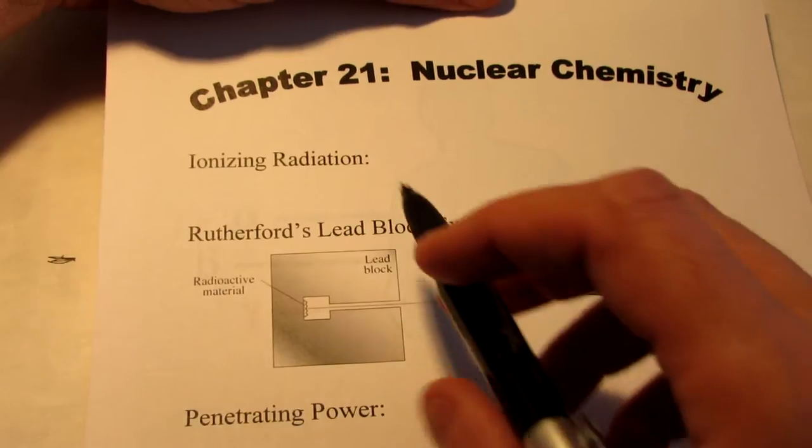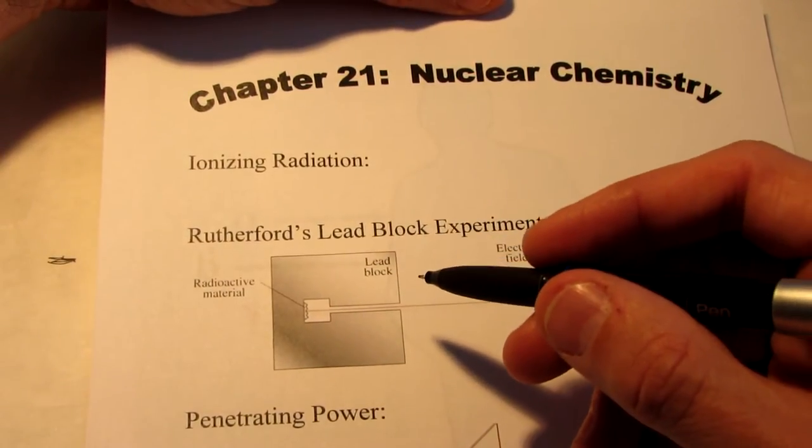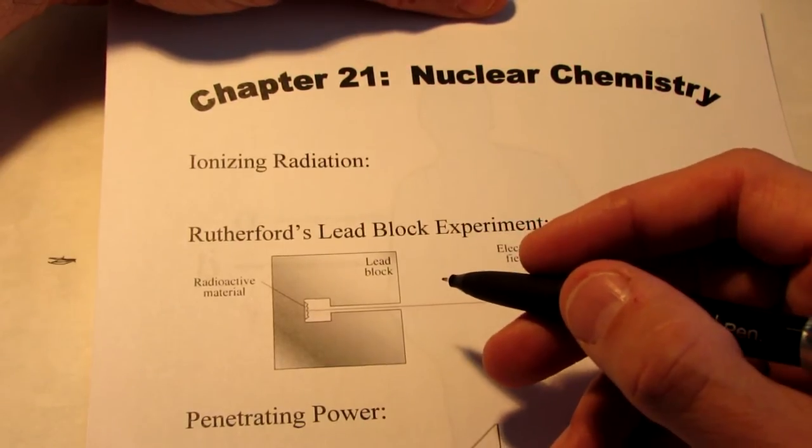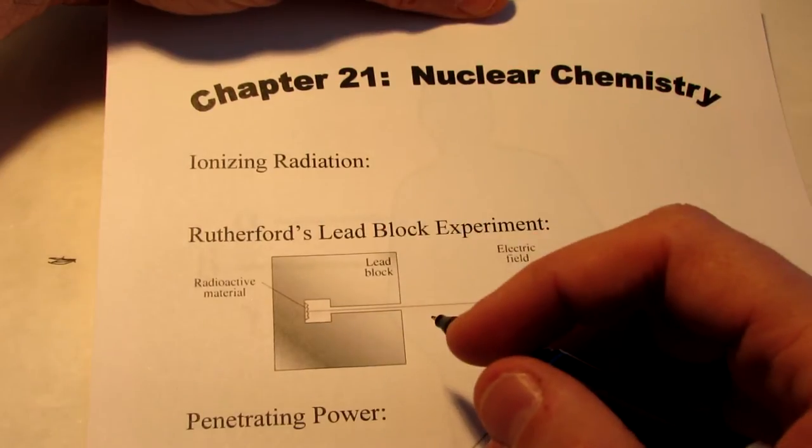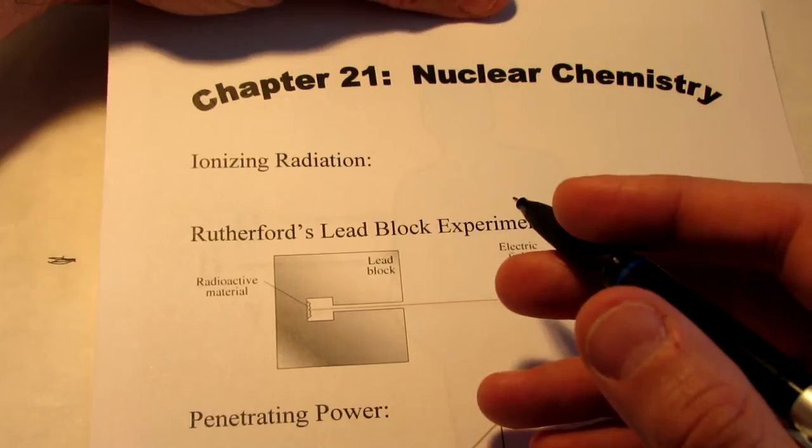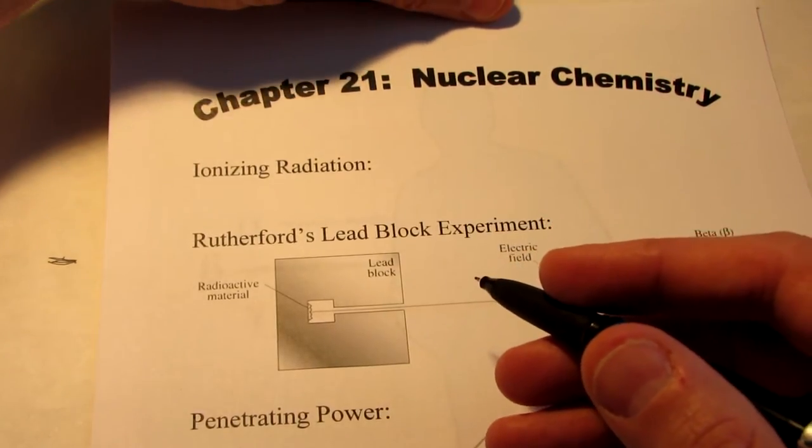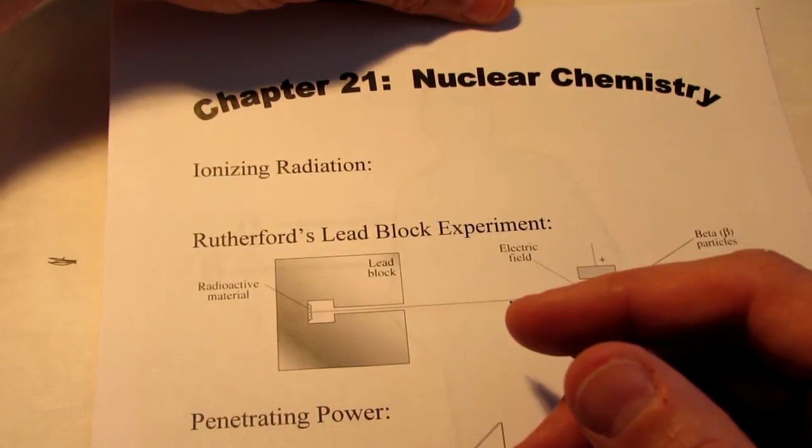Now first of all, let's talk about what ionizing radiation is. We've talked about the electromagnetic spectrum much earlier in the year. The electromagnetic spectrum is forms of radiation both ionizing and non-ionizing. Non-ionizing would be something like heat waves, radio waves, infrared and visible light. Ionizing radiation would include ultraviolet radiation, x-rays and gamma rays.